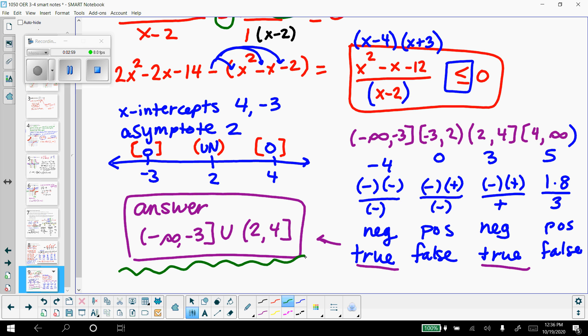And then x has to be between negative infinity and negative 3, including negative 3, because it can be 0. And then 2, not including 2, because that's an asymptote, to 4, including 4, because that part's equal to 0, so that's okay. There's our final answer.